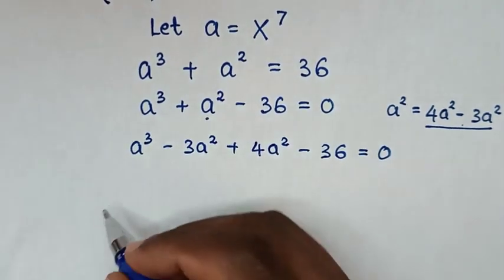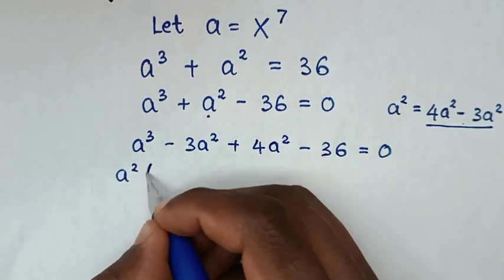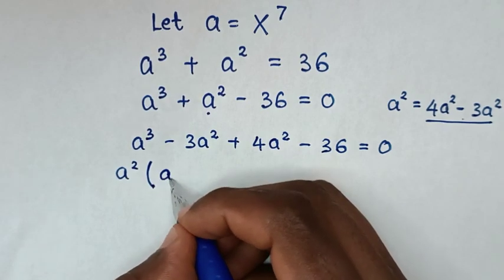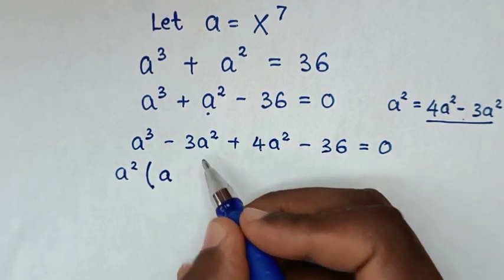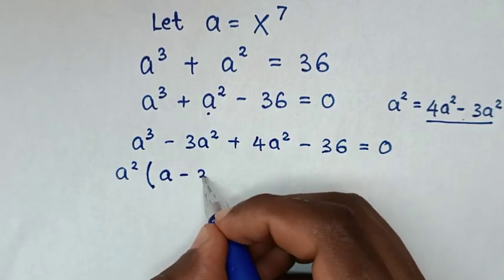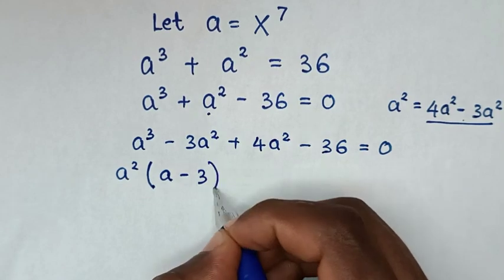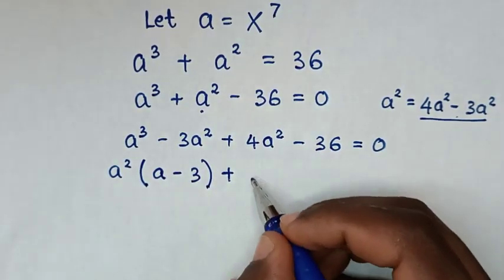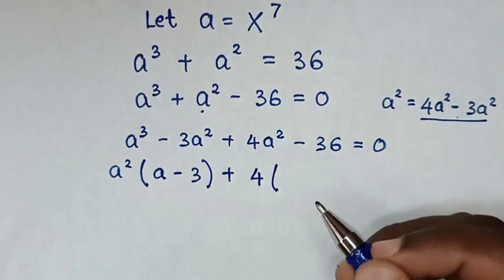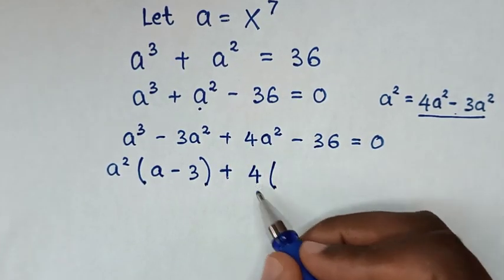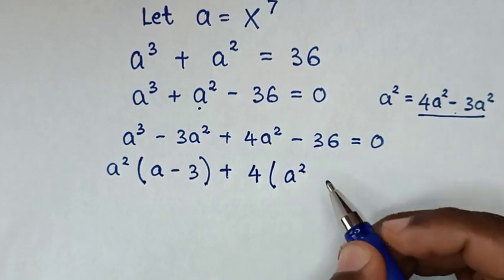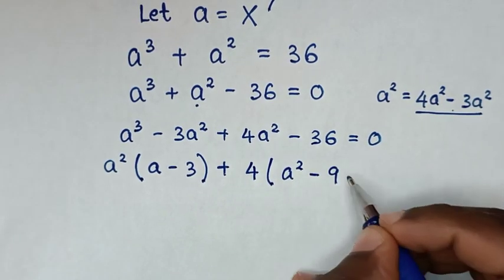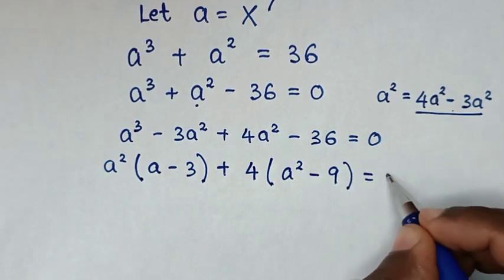In here, a squared is common, so we take a squared out of the bracket. a cubed divided by a squared is a; negative 3a squared divided by a squared is negative 3. Then, 4 is common in the remaining terms, so we take 4 out: 4a squared divided by 4 is a squared, and negative 36 divided by 4 is negative 9.